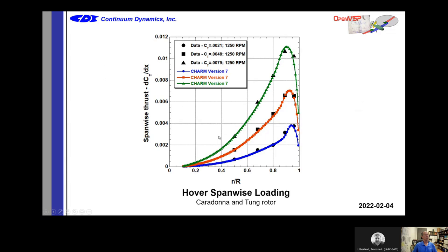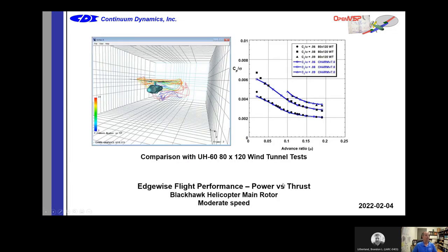You also need to know the spanwise loading — the thrust distribution along the blade from root to tip at different thrust levels. CHARM can do this, which is important for getting the wake solution properly. If you don't know the spanwise loading, you won't get the wake solution or the structural loads on your blade.